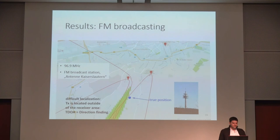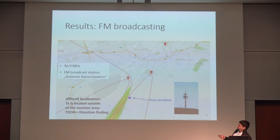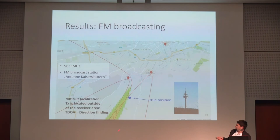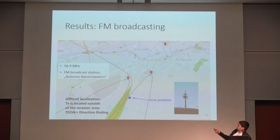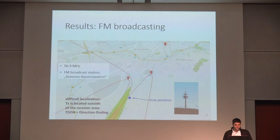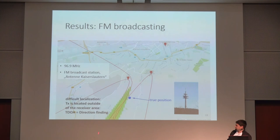The next signal is an FM broadcasting signal at 97 megahertz — a broadcast station called Antenne Kaiserslautern, located right outside the receiver area. You can see that localization here is becoming difficult; the transmitter must be somewhere in a broad area. This is because good accuracy can only be achieved between the receivers — this transmitter is located far outside, showing how difficult it is to localize transmitters lying outside the receiver area. At least you can get some direction-finding, indicating the general direction of the transmitter.